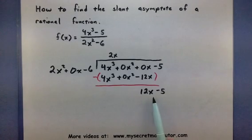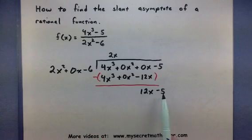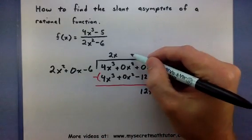Now at this point, the power is now less than what I'm dividing it by. So this polynomial down here represents my remainder.